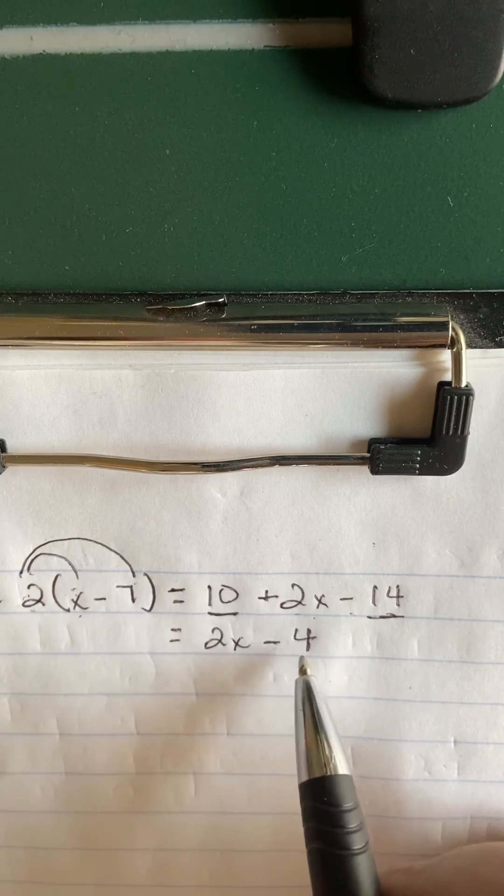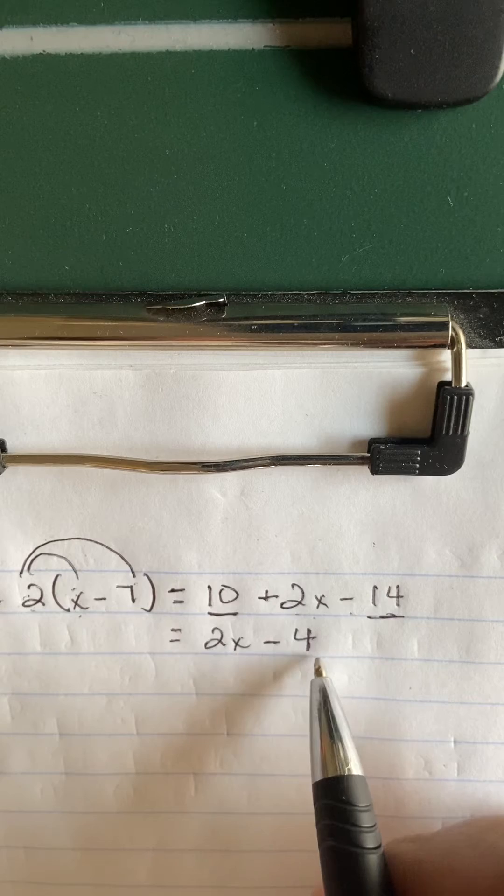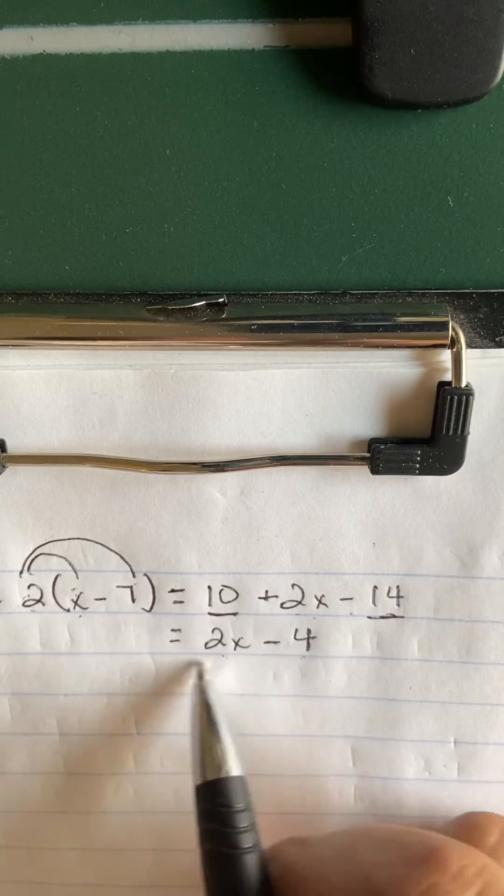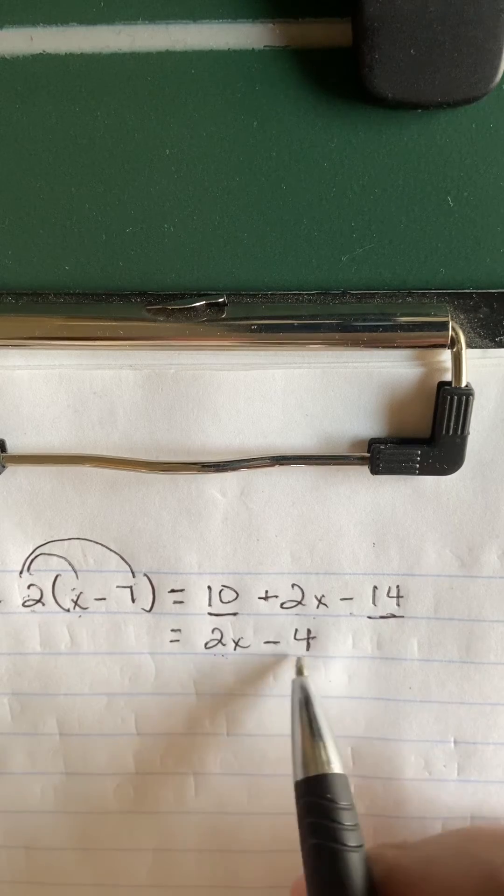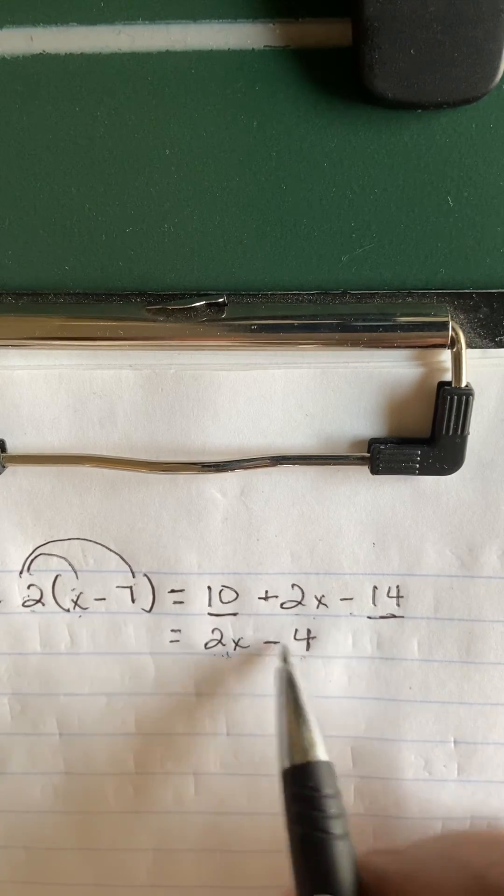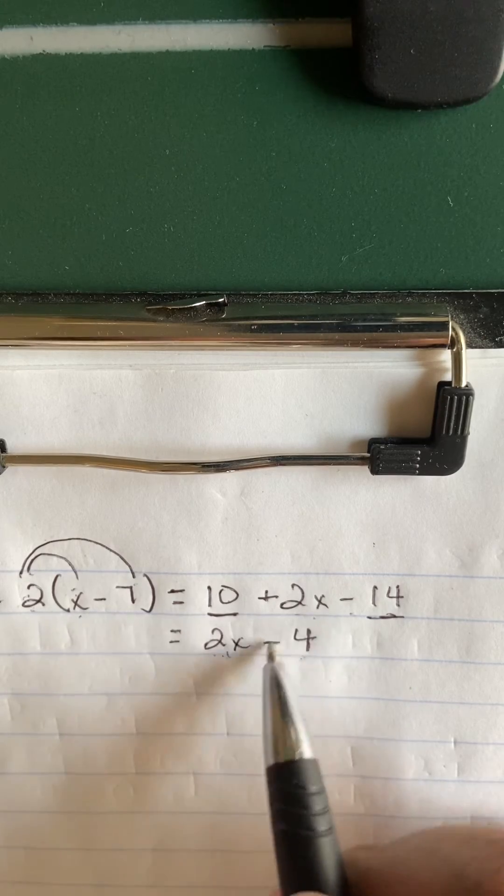...4. Now, you can't do 2x minus 4 and get negative 2x, because x and a constant are not like terms. These are not like terms, so you can't combine these using addition or subtraction. You could multiply or divide them by each other, but that's not what you're being told to do because of that minus sign in between.